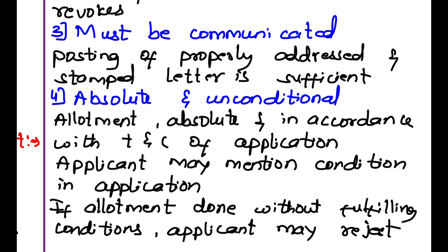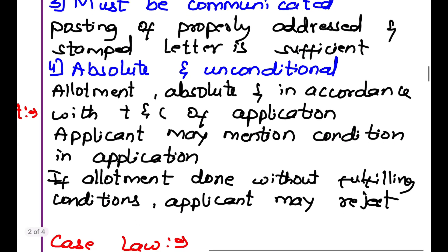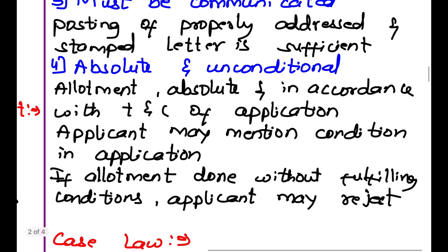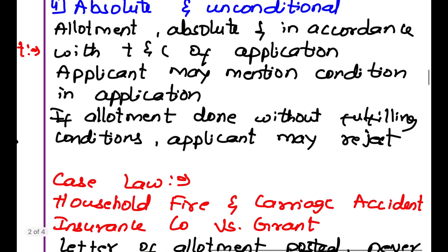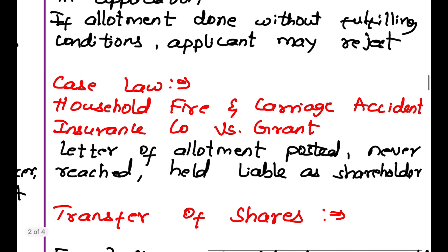The applicant will not be liable as a shareholder if conditions are not met. If the company has to allot shares, they have to commercially accept his conditions. If allotment is done without fulfilling conditions, the applicant may reject the offer. Case Law: Household Fire and Carriage Accident Insurance Co. vs. Grant — a letter of allotment was posted but never reached the applicant, but he was held liable as a shareholder since it was posted properly.